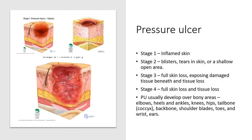There are four stages of pressure ulcers. Stage 1 can be just inflamed skin. Stage 2 shows blisters, tears in skin, or a shallow open area. Stage 3 is full skin loss exposing damaged tissue beneath. Stage 4 is full skin loss and tissue loss.